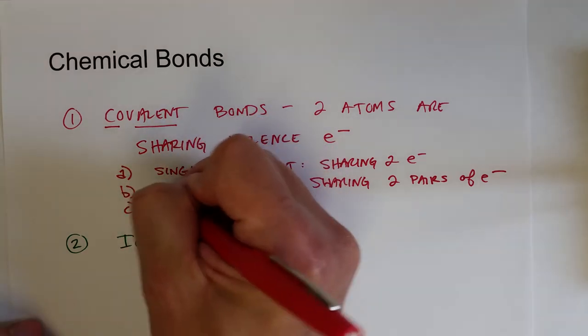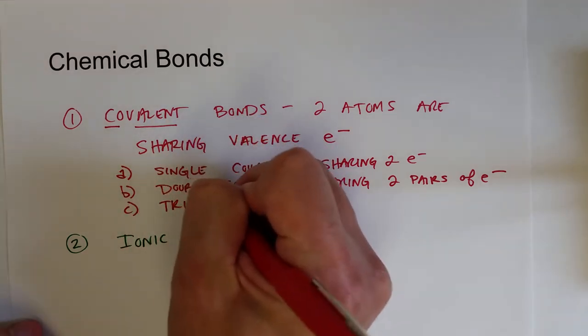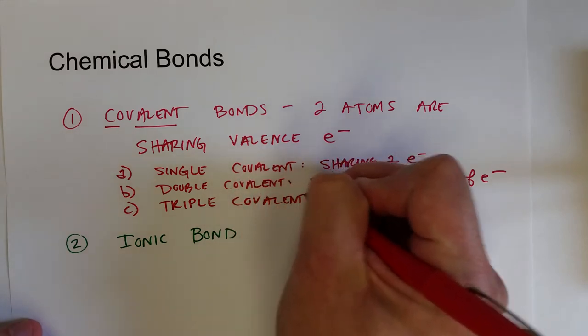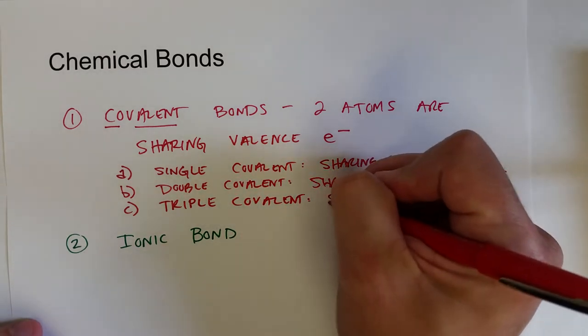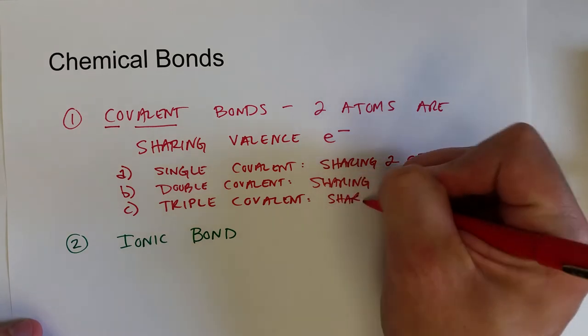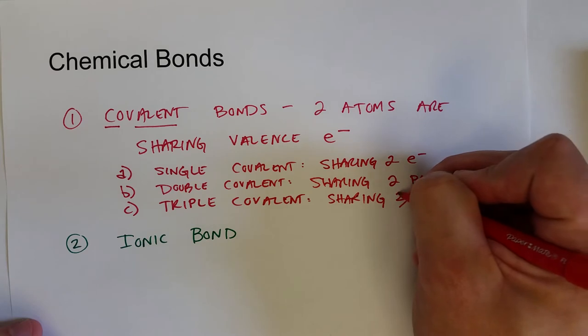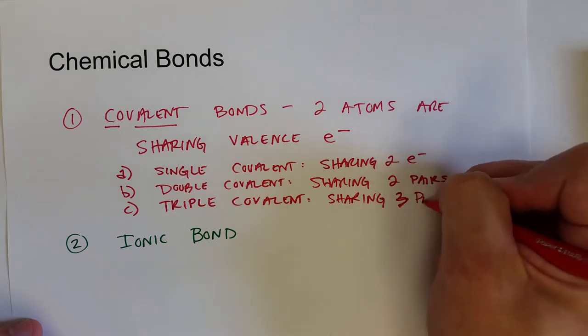And the last one would be a triple bond, a triple covalent bond, where the atoms are sharing three pairs of electrons for a total of six, three pairs.